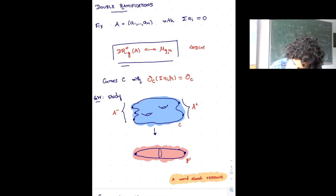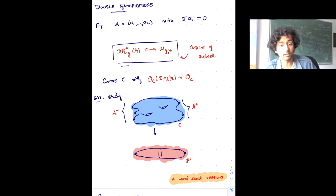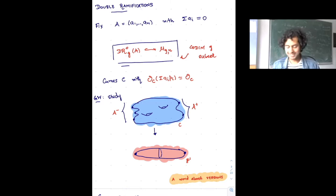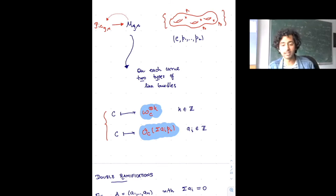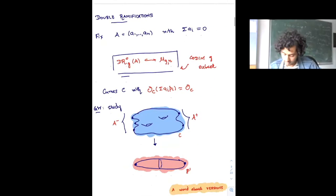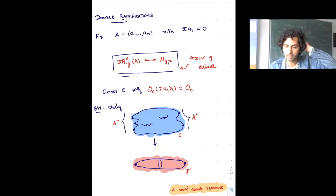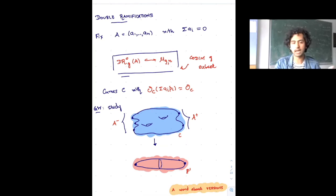You can convince yourself using basic geometry of algebraic curves that this should be a codimension g subset in M_{g,n}. DR_g is a codimension g subset of M_{g,n}. This is one version of a construction — you can twist it up in various ways: maybe you want the sum of a_i p_i to be a power of ω, or maybe you study some other moduli problem with another natural line bundle floating around.